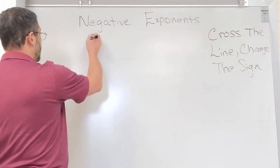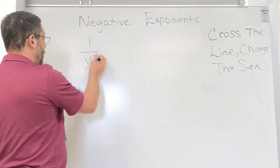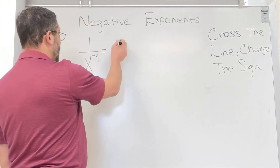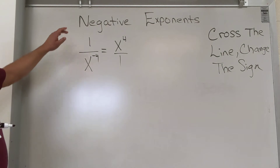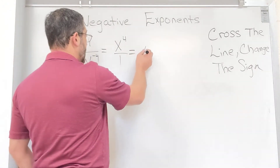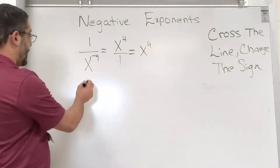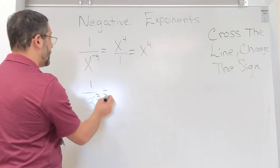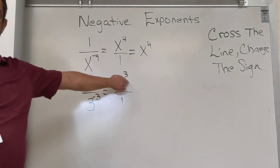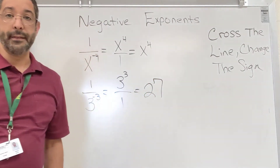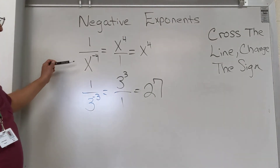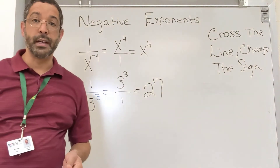What would happen if I had a problem like one over x to the negative four? I do the same thing — write it as its reciprocal. That's just going to be x to the fourth over one. Instead of making my numerator my denominator, I make my denominator my numerator, and the exponent becomes positive, equaling simply x to the fourth. Similarly, one over 3 to the negative third — cross the line, change the sign — gives me an answer of 27.